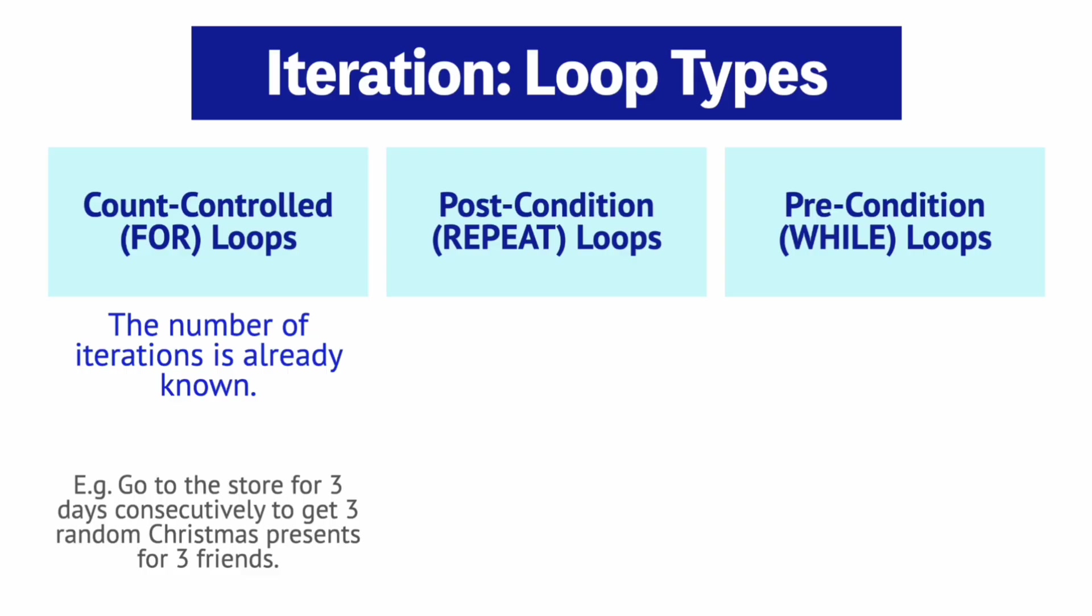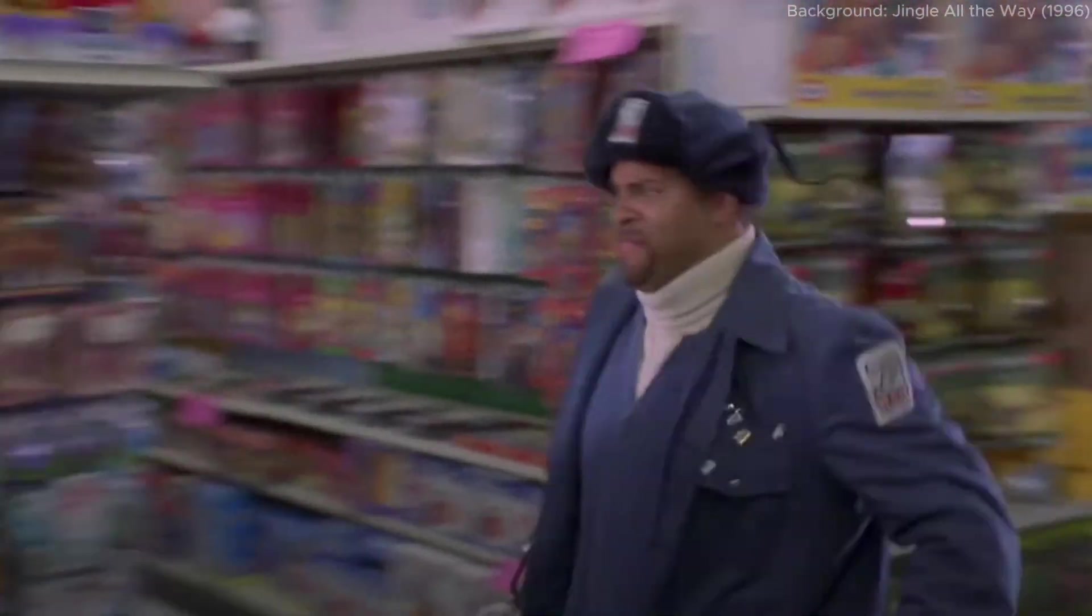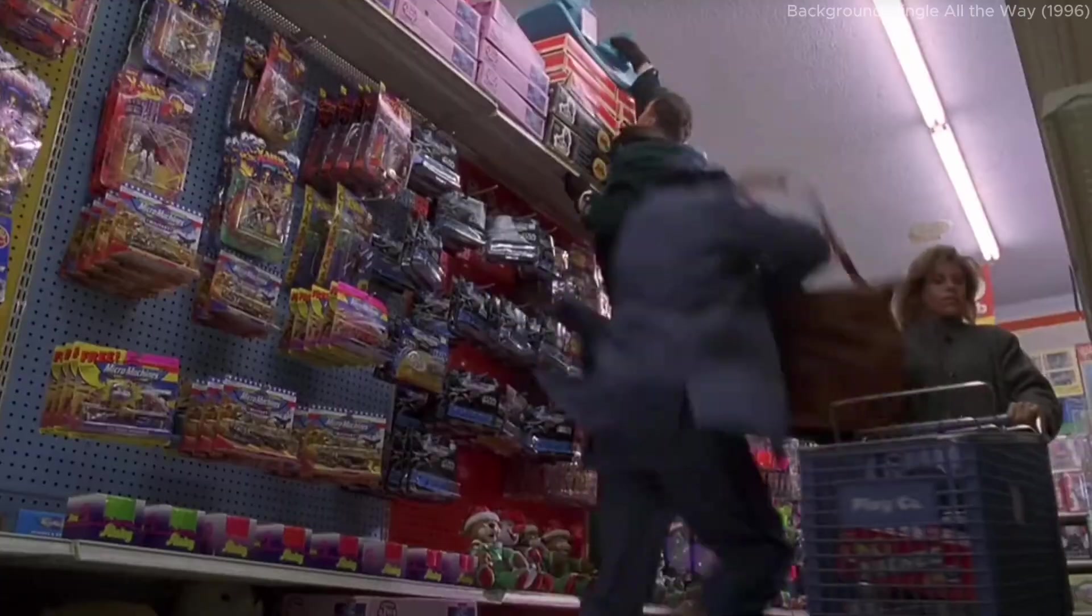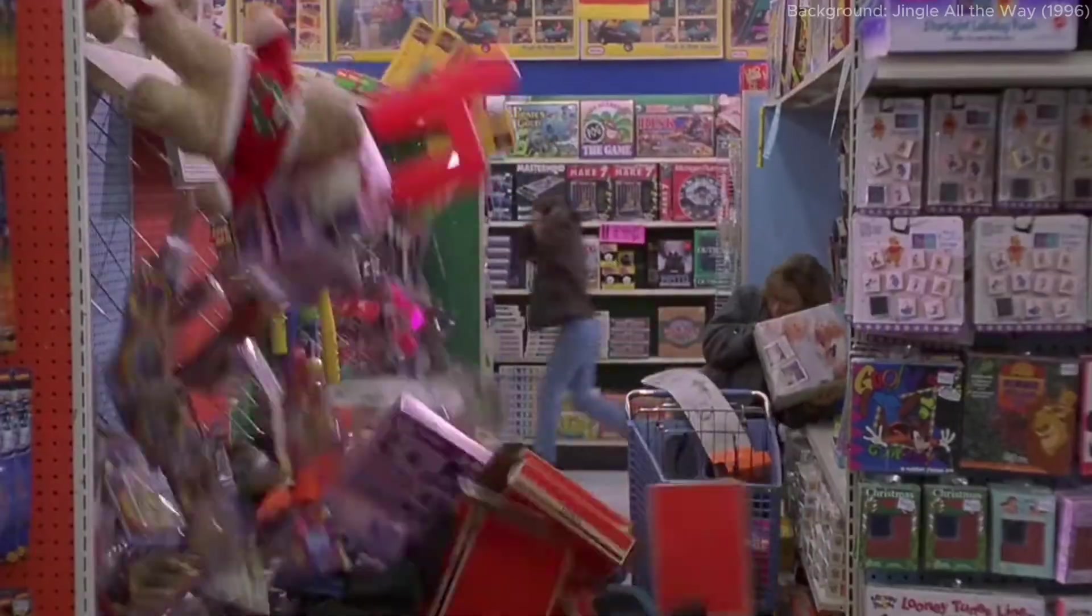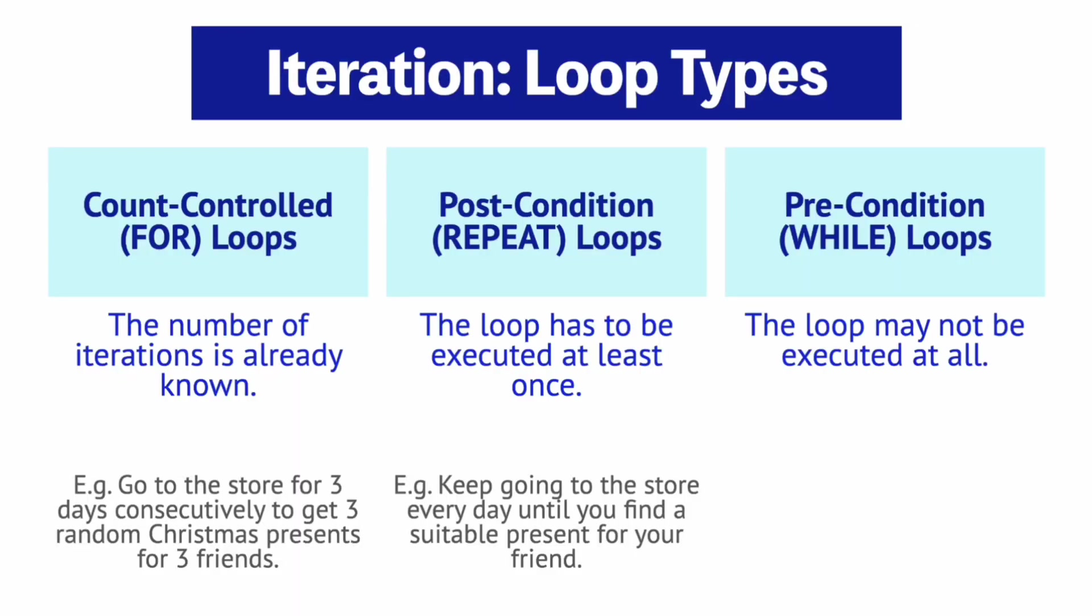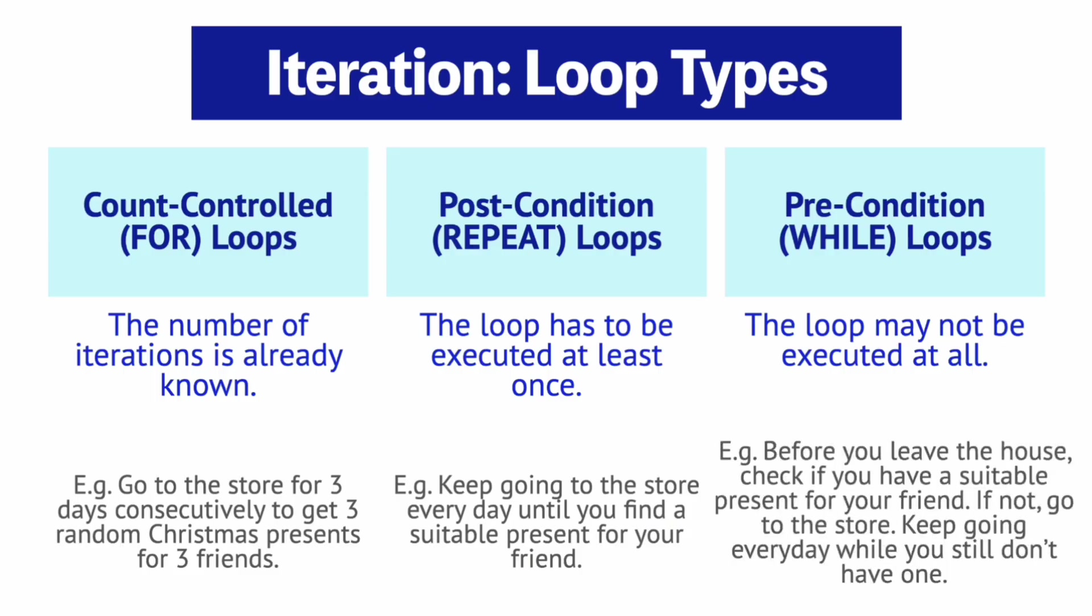For the post condition loop, the loop has to be executed at least once before the loop's condition is checked. For example, keep going to the store every day until you find a suitable present for your friend. And for the precondition loop, the loop may not be executed at all depending on the condition which is checked beforehand. For example, before you leave the house, check if you have a suitable present for your friend. If not, go to the store. Keep going every day while you still don't have one.